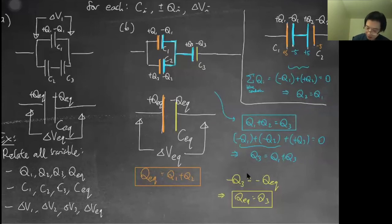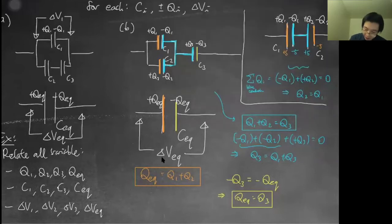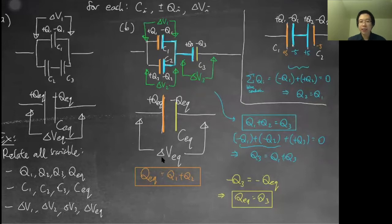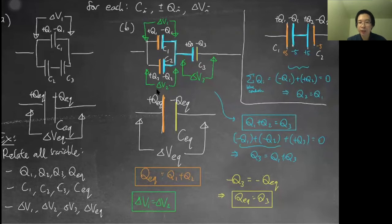Now let's look at the voltage relationships. Label delta v1, delta v2, and delta v3. The first relationship: v1 must equal v2, because this point has the same absolute potential and this point on the right has the same absolute potential. So the potential difference across c1 equals the potential difference across c2.